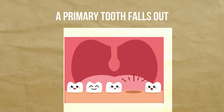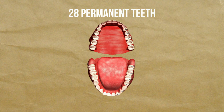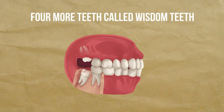When the right time comes, a primary tooth falls out because it is being pushed out of the way by the permanent tooth behind it. There are 28 permanent teeth in all — eight more than the original set of baby teeth. Between the ages of 17 and 21, four more teeth called wisdom teeth usually grow in at the back of the mouth, completing the adult set of 32 teeth.